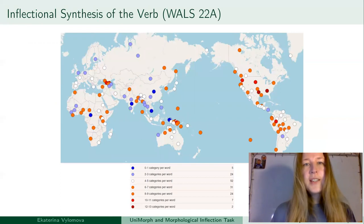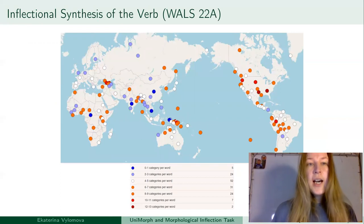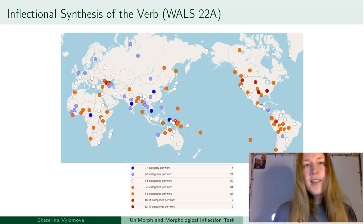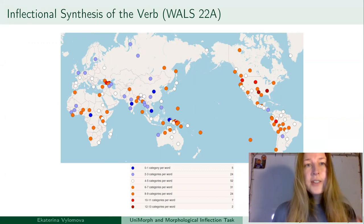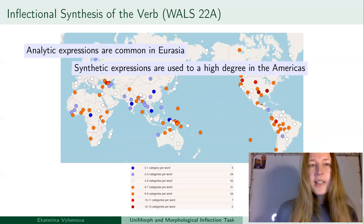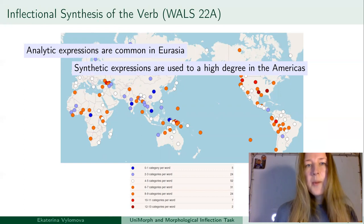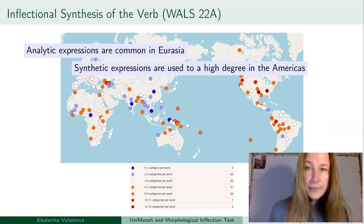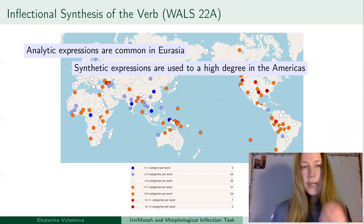Moving to the next WALS feature, 22A, which describes inflectional synthesis of the verb — that is, how many categories can be expressed on the verb — we see that analytic expressions are common in Eurasia, and synthetic expressions are used to a high degree in the Americas.